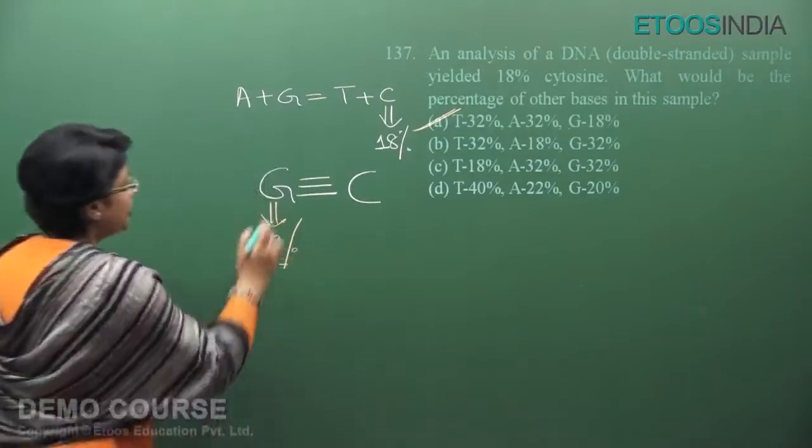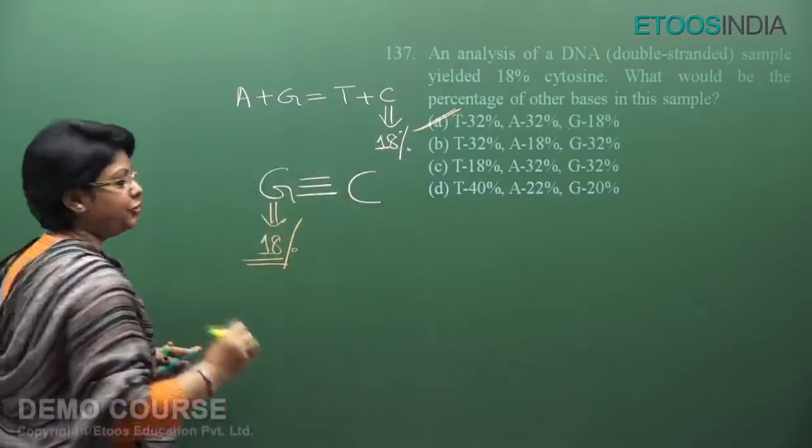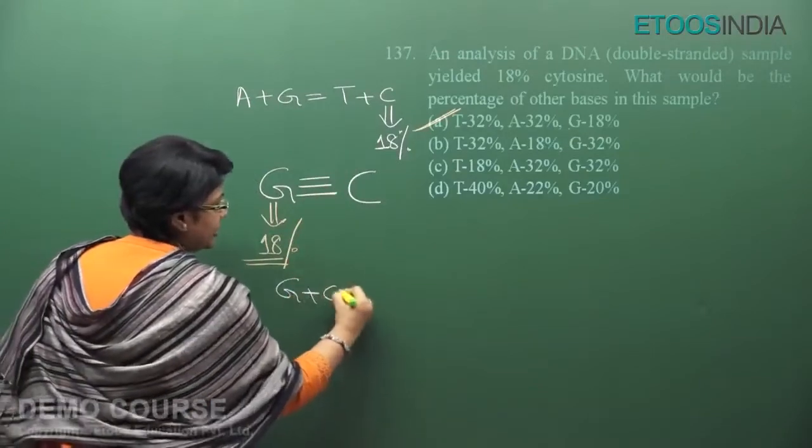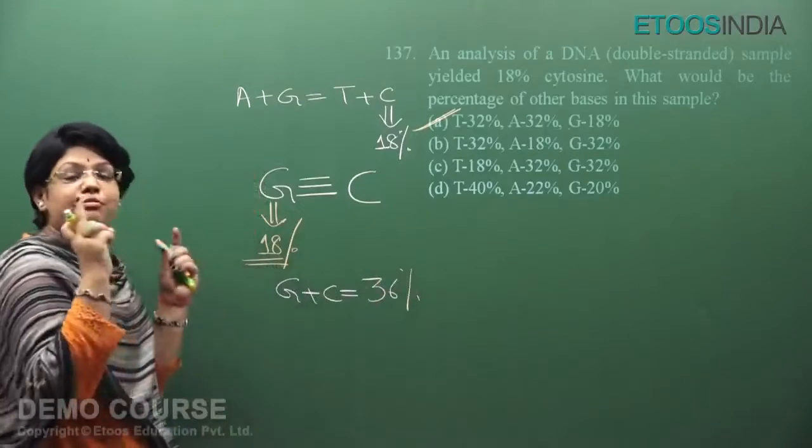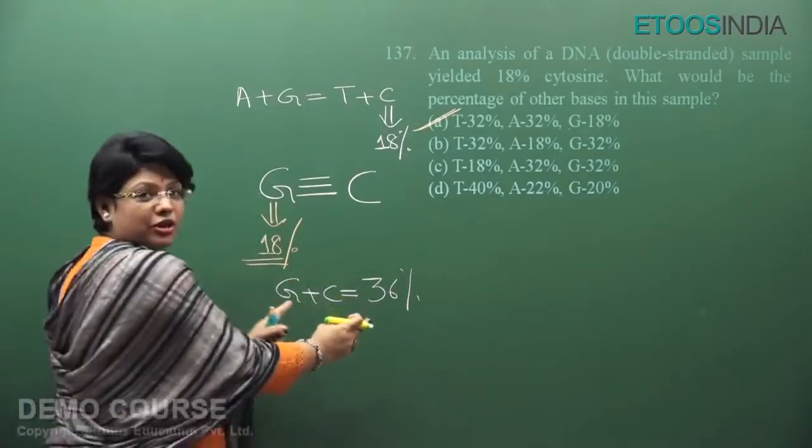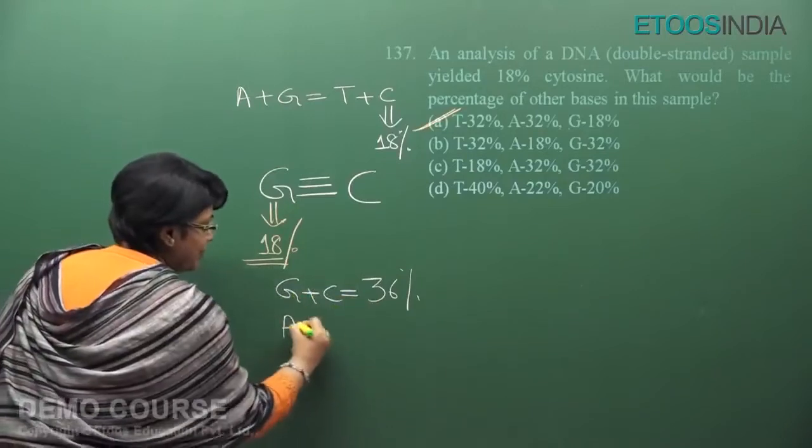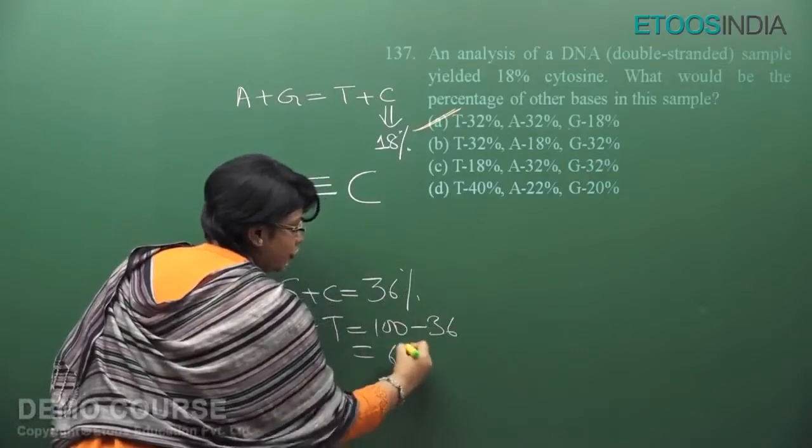So 18% is guanine and 18% is cytosine. That means G plus C is how much? 18 plus 18 equals 36%. If there are 100 bases total and 36 are already accounted for, then A plus T will be how much? 100 minus 36, that's 64%.